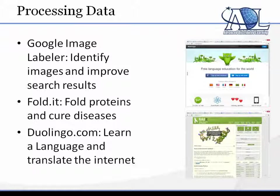Foldit is a game that uses you to fold proteins, and that data would be used to cure diseases. The famous thing that happened with Foldit was that scientists spent about ten years trying to figure out the proper folding for a protein important for HIV, and they couldn't figure it out — then three weeks later, gamers figured it out using this game.